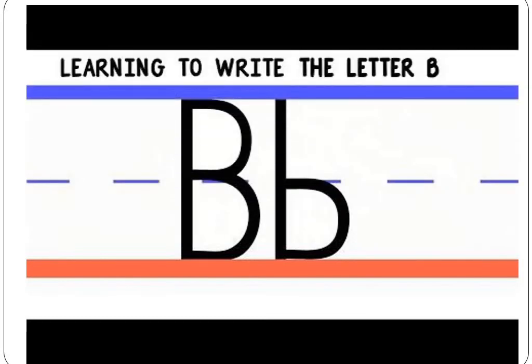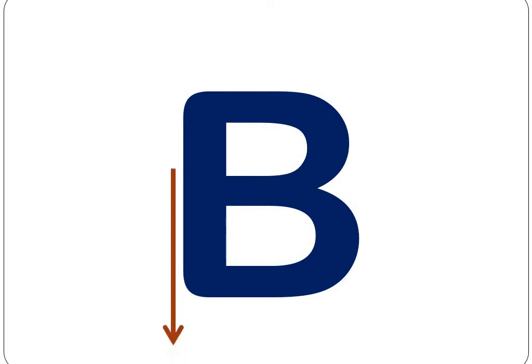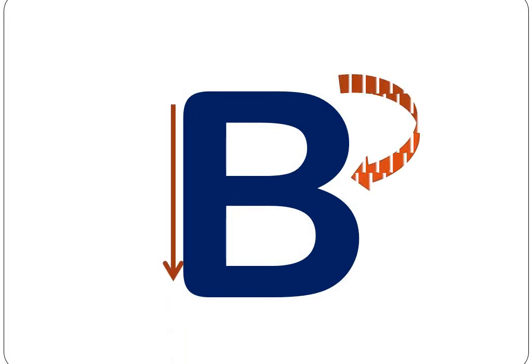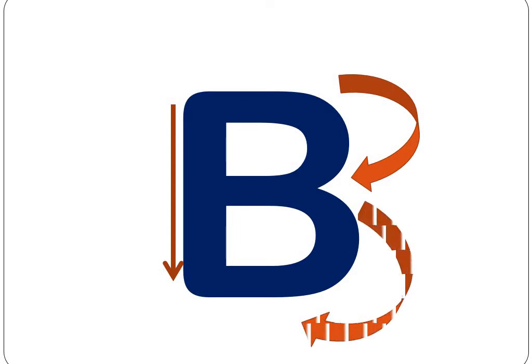How can we write capital B? Straight line down, half circle up, half circle down. One more time — capital B: straight line down, half circle up, half circle down. Okay, how can we write small B?